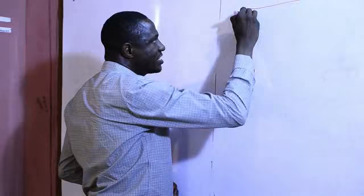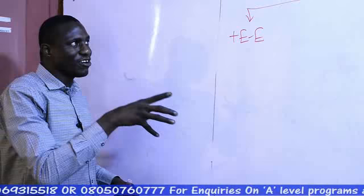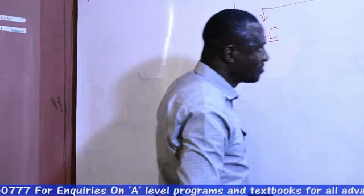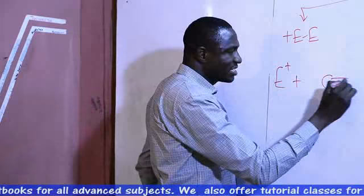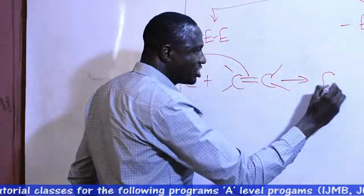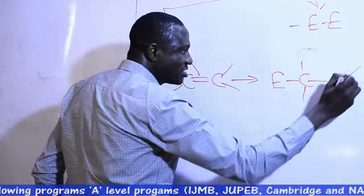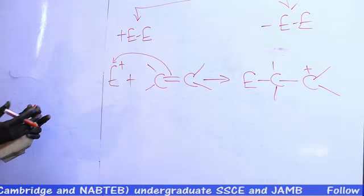This effect is divided into two: we have positive electromeric effect and we have negative electromeric effect, depending on the nature of the attacking reagent, whether it is an electrophile or a nucleophile. When the attacking reagent is an electrophile, that effect is known as positive electromeric effect. For instance, you have an electrophile attacking a pi bond system. The pi bond electrons between the two carbon atoms attack the electrophile, and you then have a positive charge remaining on the carbon.